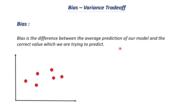Let's say that we are making a machine learning model to predict the salary of a person given their experience. The person has four years of experience and the salary they are currently getting is about 30,000 rupees per month. We feed this experience data to our machine learning model and let's say our model predicts a salary of about 28,000 rupees per month. Here the value predicted by our model is 28,000 and the correct value is 30,000, so the difference between the two values is 2,000 rupees. This difference between the predicted value and the correct value is called bias — it tells us what the difference is between those two values.